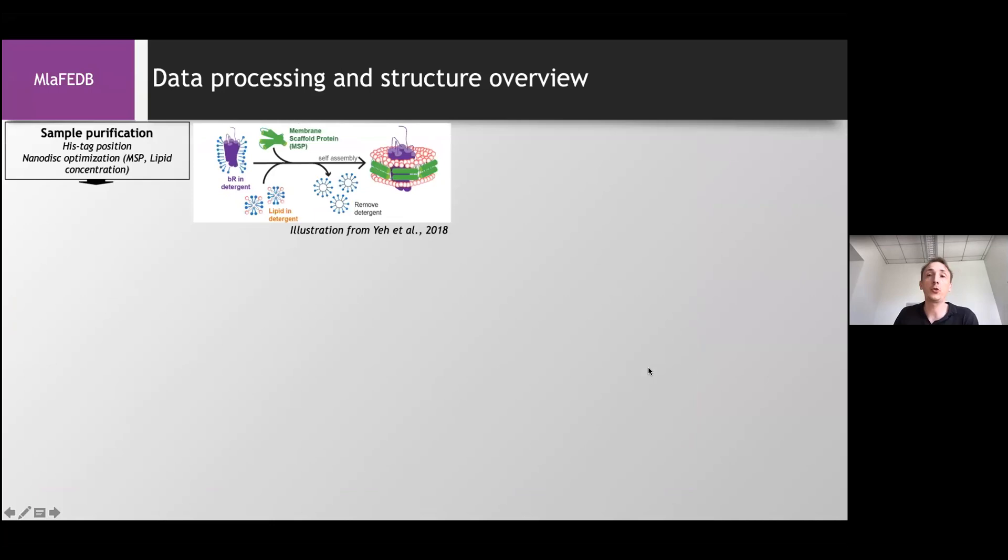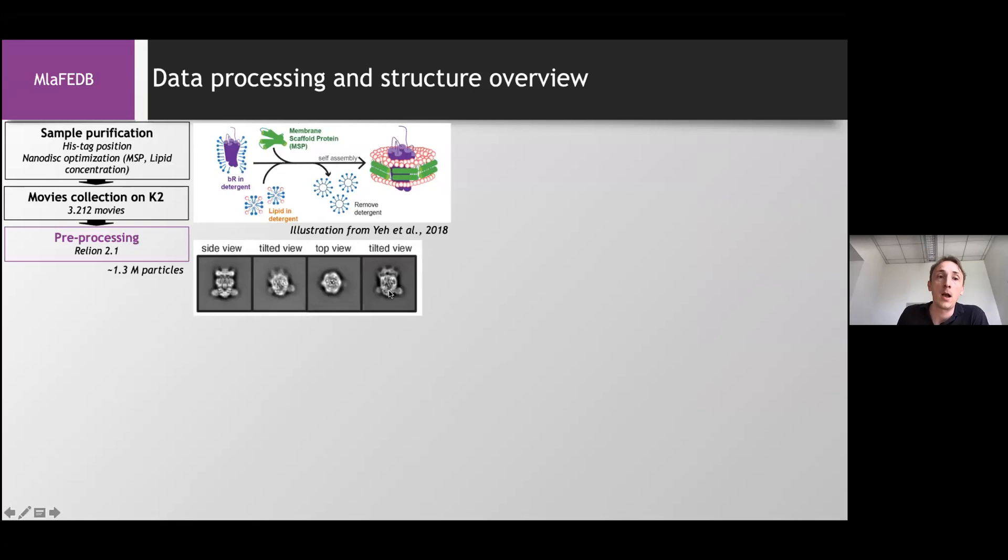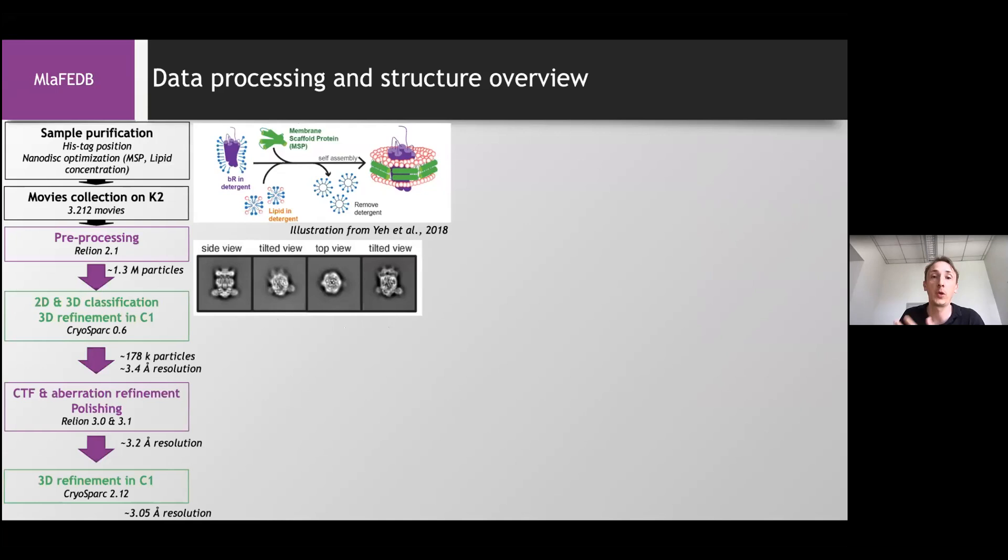So to solve the structure of this protein, we moved to cryo-EM and we purified the protein and used the nanodisc to protect the transmembrane regions of the whole complex. And in the purification process, the things which had to be optimized was the position of the His tag, for example, and also some nanodisc optimization, like the type of MSP protein used and the lipid concentration. Then we acquired about 3,000 movies in this case, and you can see some example of 2D classes here, which were obtained with Relion. And as CryoSPARC appeared, a new version of Relion also, and CryoSPARC came, so we kept on using and moved back and forth from Relion to CryoSPARC to take advantage of the different tools from the different software packages, and also the different improvements.